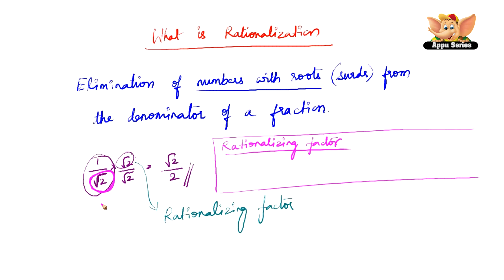So we just have to take that number and multiply the fraction, multiply and divide it by that number and that is called as a rationalizing factor. Rationalizing factor is the number with root present in the denominator which will help us in rationalizing.